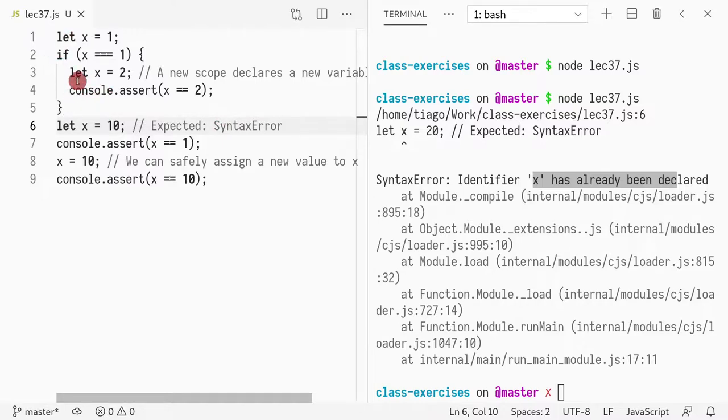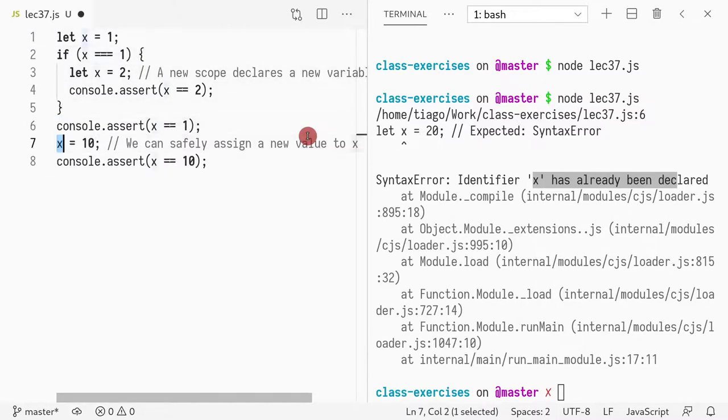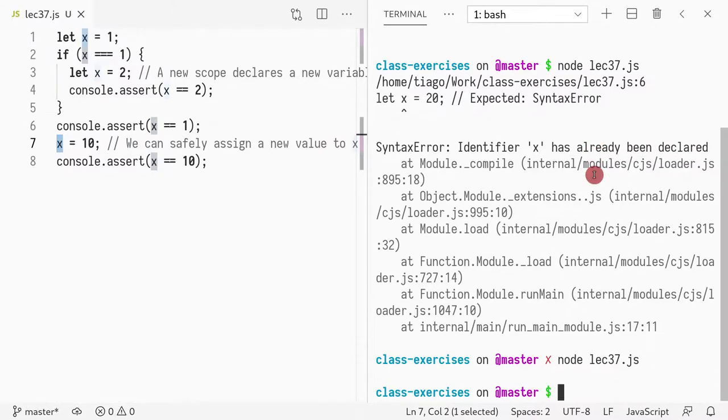So this is similar to Racket in the idea of scoping. But it's different to Racket in the sense that you can re-declare a variable. In Racket, you cannot do that. So in Racket, this would be an error if you try to redefine. But if you try to mutate the variable x, you can't do that in Racket. At least I haven't taught you how to do it.